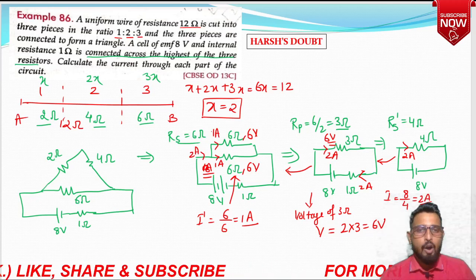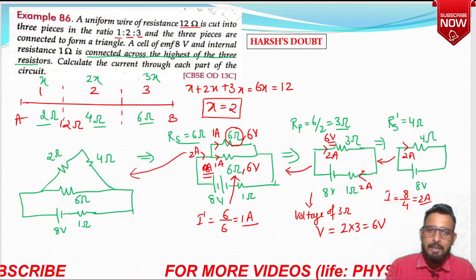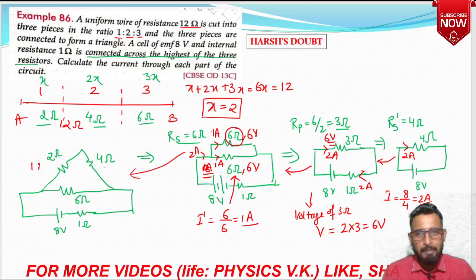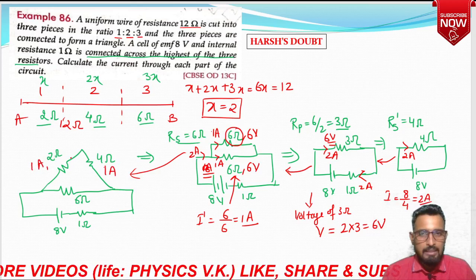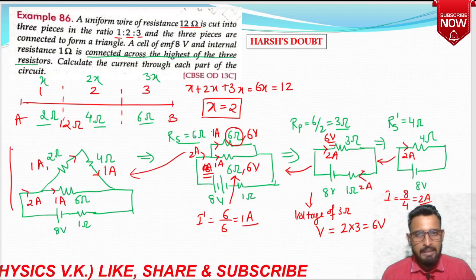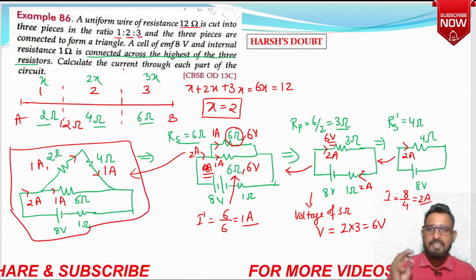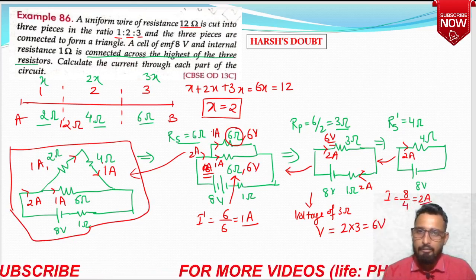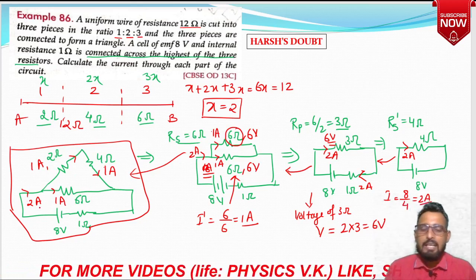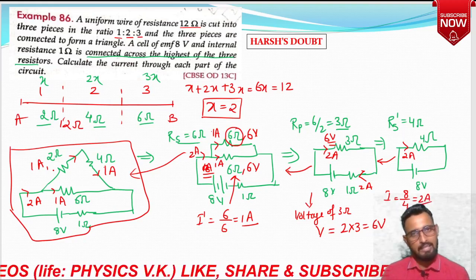The upper 6 ohm is a series combination of 2 and 4 ohm. In series, current is the same. So 2 ohm carries 1 ampere, 4 ohm carries 1 ampere, and the lower 6 ohm carries 1 ampere. Total current is 2 ampere. So the current through each part: 2 ohm → 1 A, 4 ohm → 1 A, 6 ohm → 1 A. I hope Harsh's doubt is now clear.